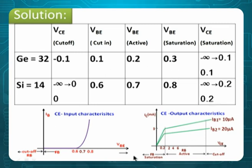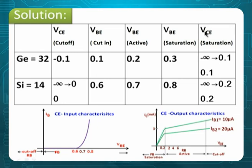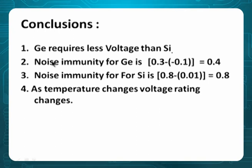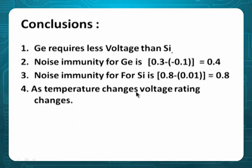VBE(cutoff) and VCE(saturation) are the key voltage ratings. Conclusion: germanium requires less voltage than silicon. Noise immunity for germanium is 0.3 minus (minus 0.1) = 0.4. Noise immunity for silicon is approximately 0.8. Therefore silicon has more noise immunity than germanium. Also, as temperature changes, voltage ratings change accordingly.